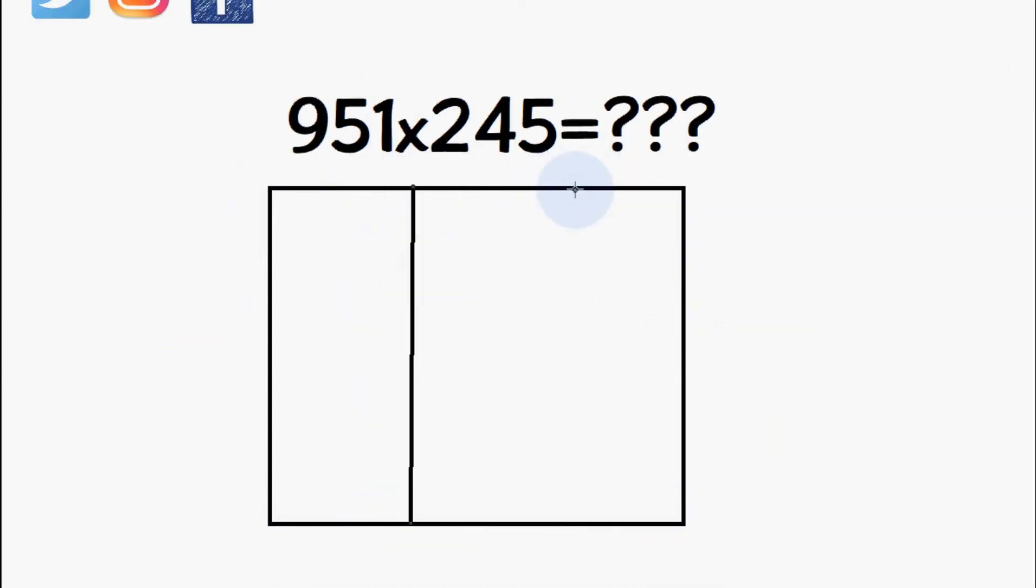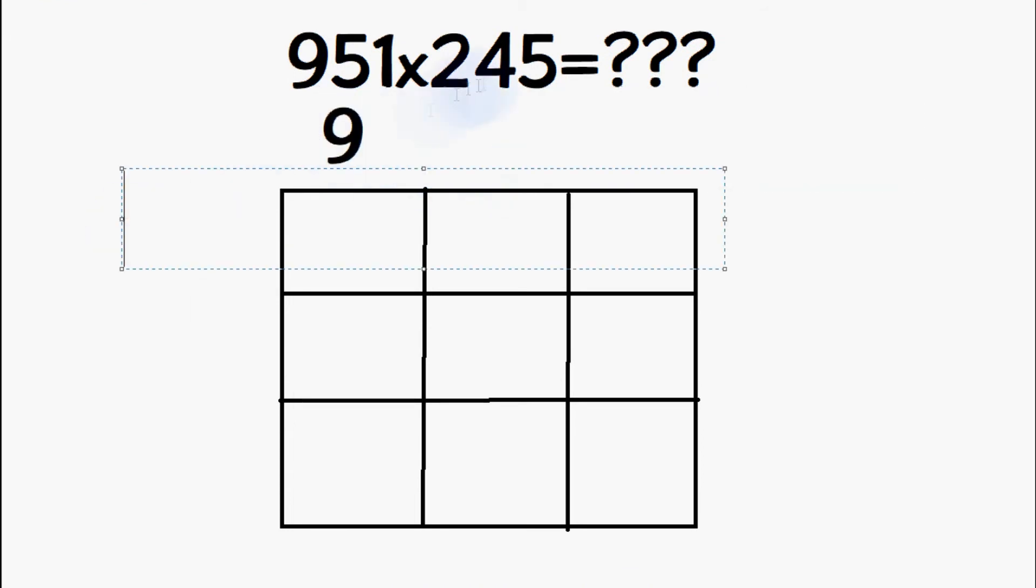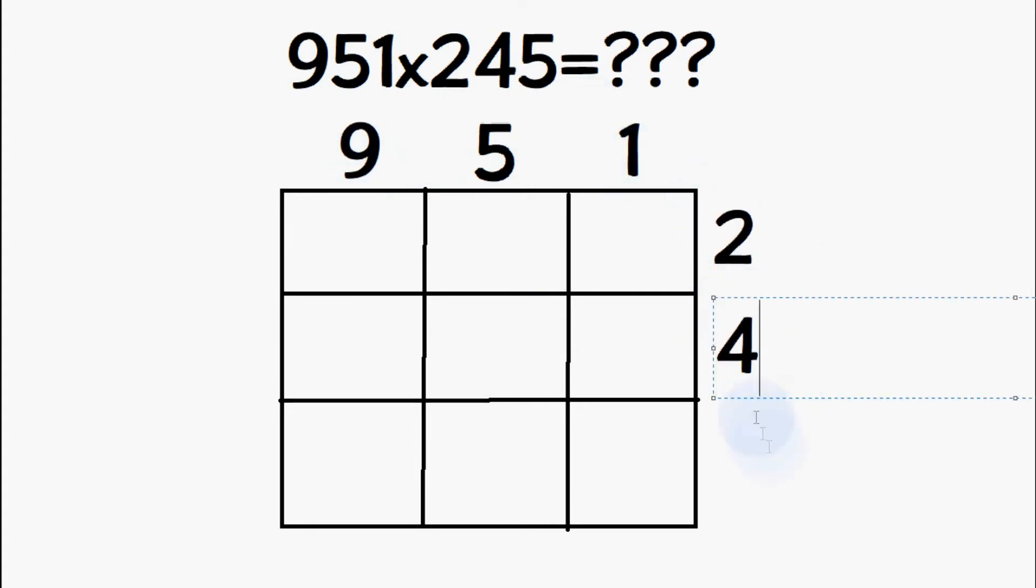So here I am drawing the same box again. We have the equation 951 times 245, so it's a lot bigger than the last one that we did, so we're going to draw the same box but now we're going to divide it in 3. We're going to add 951 at the top, so we're going to divide it as 9, 5, 1, and then we're going to add 245 to the side.